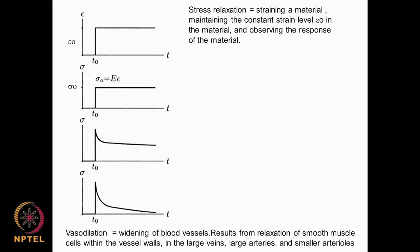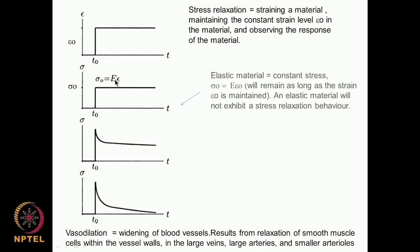That is called creep and recovery. Conversely, there is something called stress relaxation. Suppose I strain a material at time T0 — that means I pull it and then observe how the stress looks. A material like stainless steel, a normal elastic material, will follow the law sigma-0 equals E multiplied by epsilon, so it immediately picks up the stress.